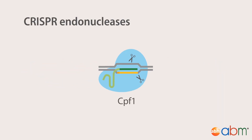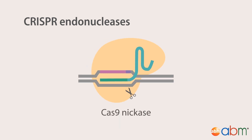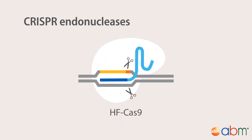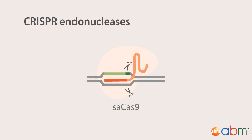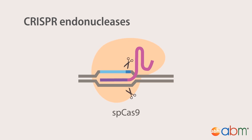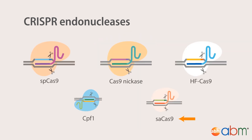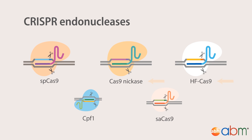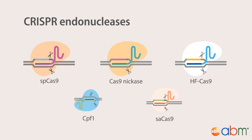The list of CRISPR endonucleases that can be used for gene editing is numerous and growing every year — from smaller endonucleases that can fit into adeno-associated viruses for tissue-specific delivery, to endonucleases modified to reduce off-target effects. The CRISPR system has unprecedented versatility.